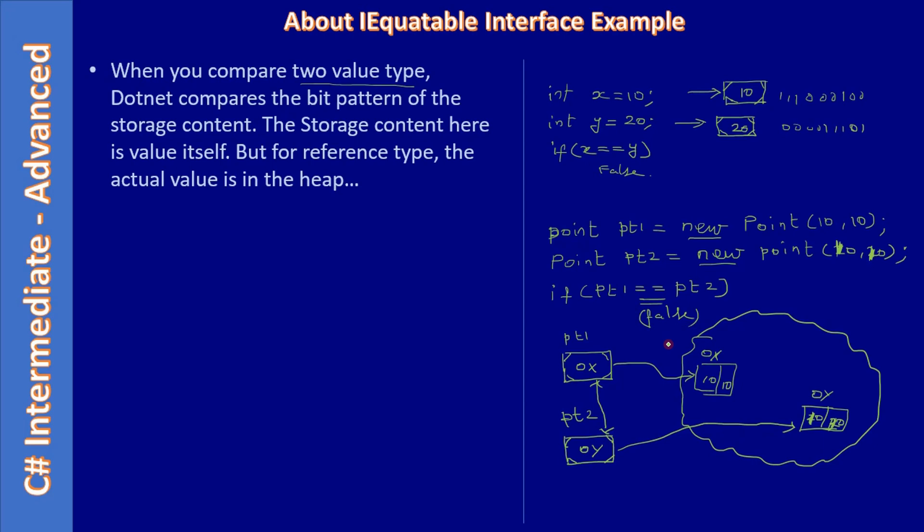But our intention is to return true because the content is the same in both cases. This is 10, 10 and this one is also holding the value 10, 10. Both points are equal content-wise.